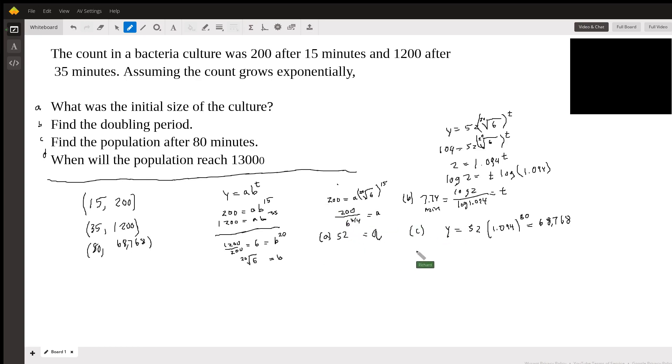And then part D, when will it reach 1,300? So you would just say 1,300 equals 52 times 1.094 to the T. So first we'll divide out the 52. This gives me 25.